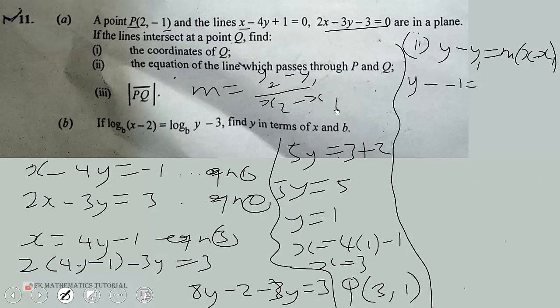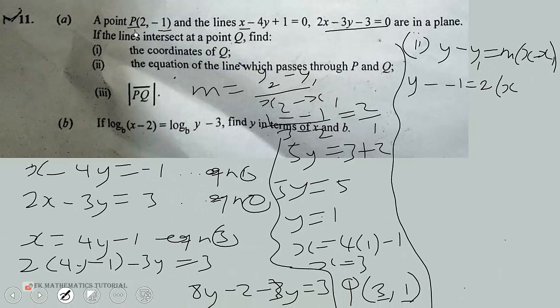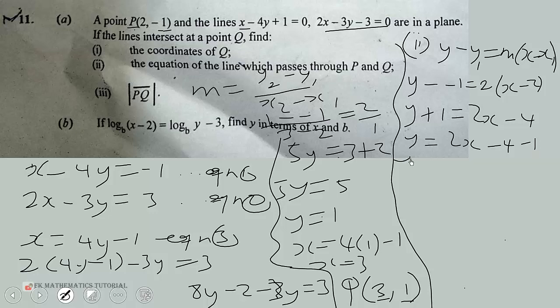Using points P(2, -1) and Q(3, 1): y₂ minus y₁ is 1 minus negative 1, which is 2. Then x₂ minus x₁ is 3 minus 2, which is 1. So m equals 2 over 1, which is 2. Substituting m equals 2 and x₁ equals 2 into the equation gives y plus 1 equals 2(x minus 2), which expands to y plus 1 equals 2x minus 4. Therefore y equals 2x minus 5, which is the slope-intercept form.